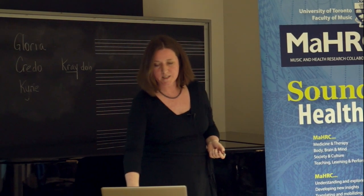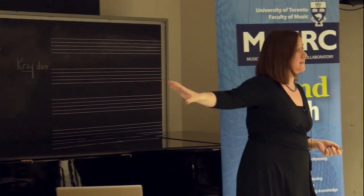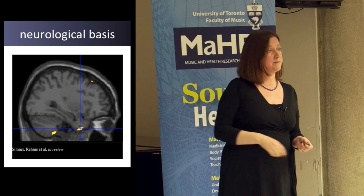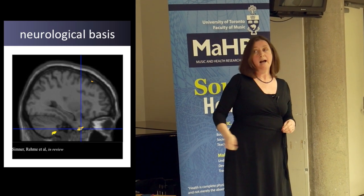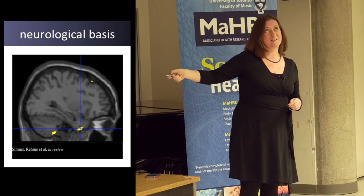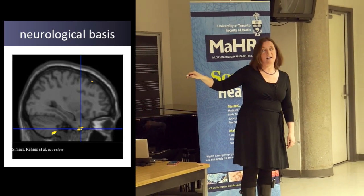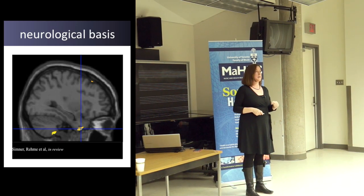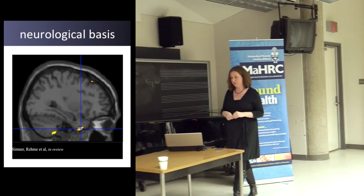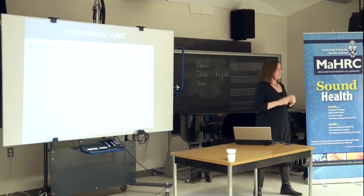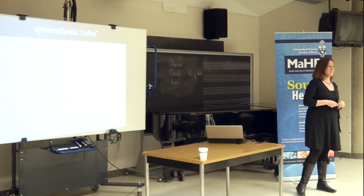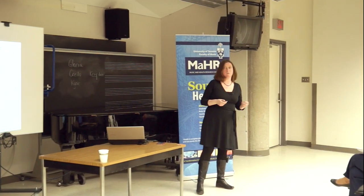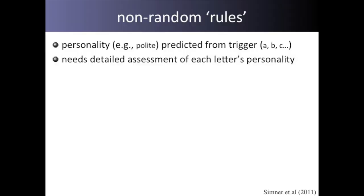This example shows the complexity of these associations. We wanted to know the neurological basis, so we recently scanned 12 individuals with sequence-personality synesthesia. What we find are extra bundles of connections in areas of the brain responsible for social processing and emotionality — extra connectivity in that region. And we wanted to know if these were random associations or whether you could predict what personality any letter was going to get. The answer is yes.